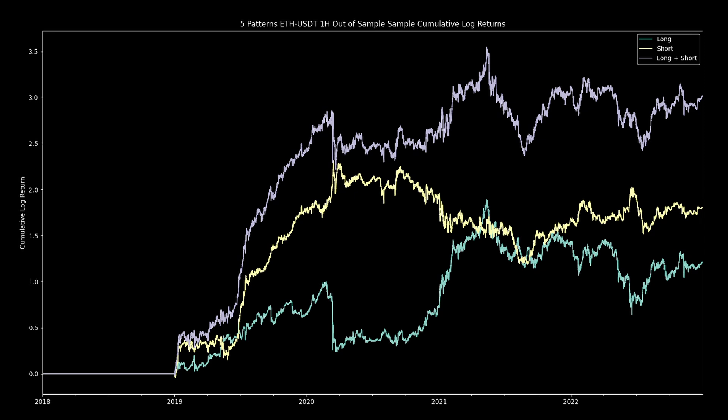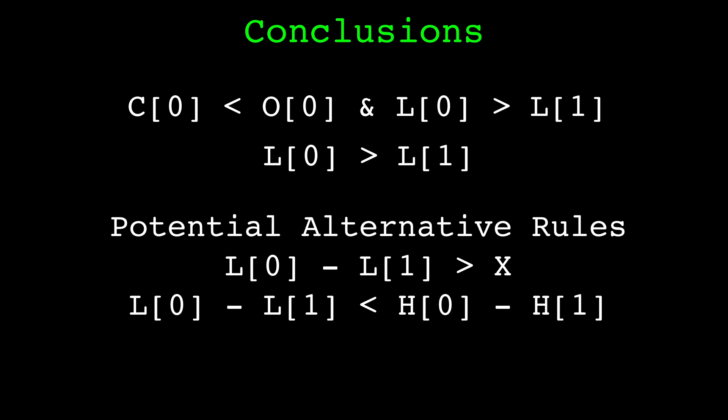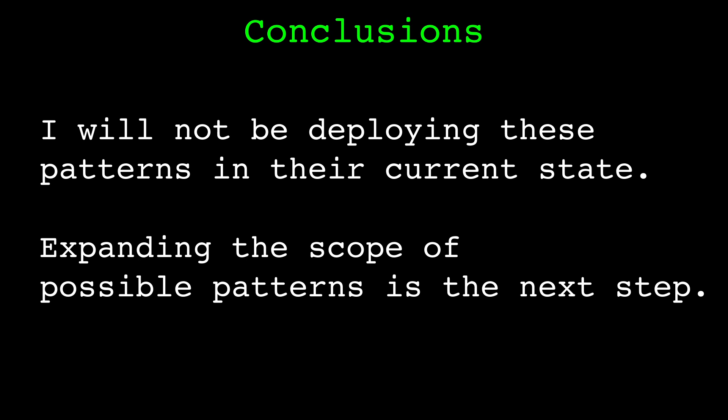We've studied optimal candlestick patterns built by comparing the recent open, high, low, and close values with each other. The results suggest there might be a small edge in the market. A potential shortcoming of these patterns is that we only test if a certain value is greater than or less than another value — more valuable information may exist in the difference, for example how much two lows differ rather than just one being higher or lower. Eventually I will expand the scope of the patterns considered to see if this is the case. The results I showed are highly theoretical and did not include trading fees or slippage. Overall, I am not going to be deploying these patterns to any of my live trading — they are simply not strong enough — but I think this is a reasonable avenue for further research.